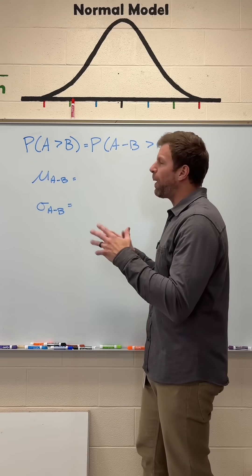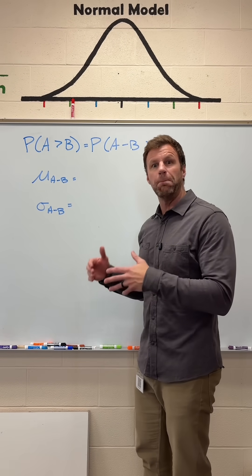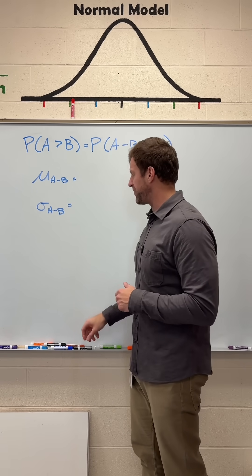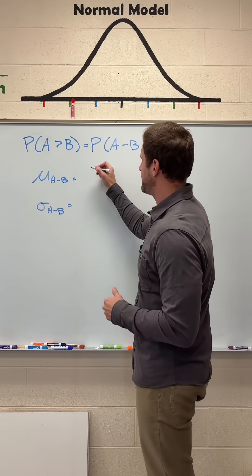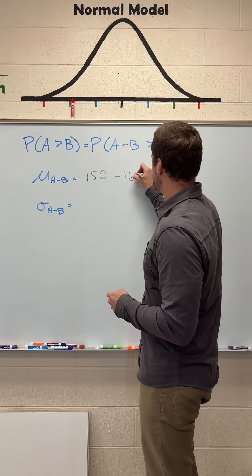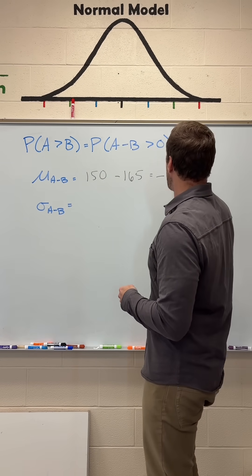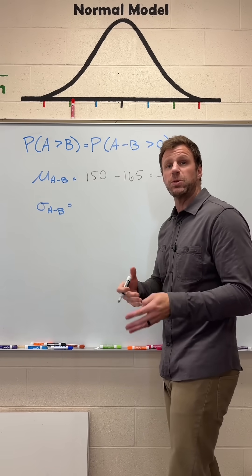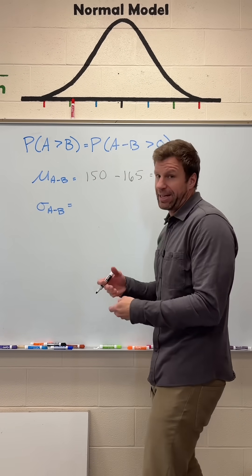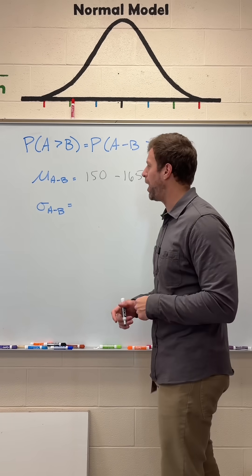Now, to figure this problem out, we have to start off by finding the mean and standard deviation for this difference. So what is the mean for the difference Andy minus Bob? Well, I just have to take Andy's score, 150, minus Bob's score, 165, and I get negative 15. So the difference between Andy and Bob is supposed to be negative 15, meaning that Andy is supposed to do 15 pins worse than Bob.